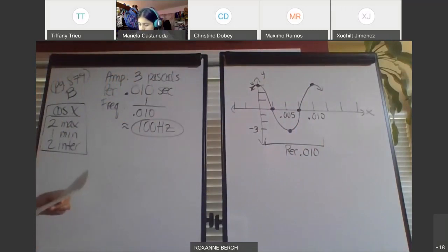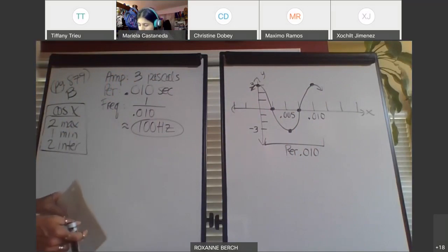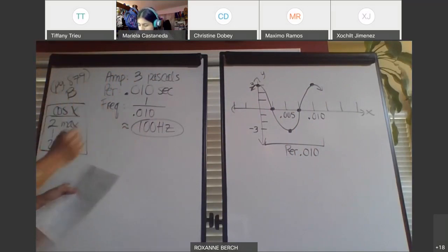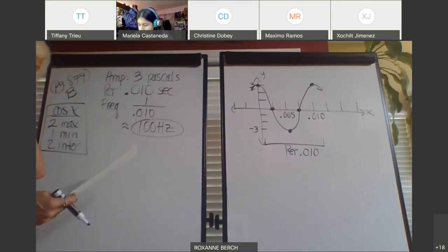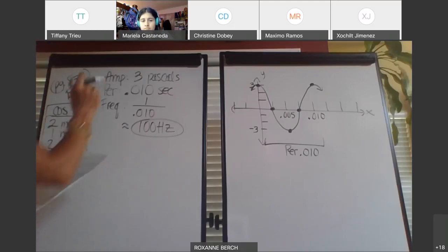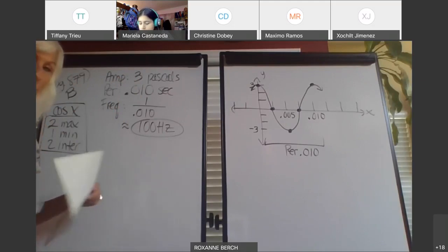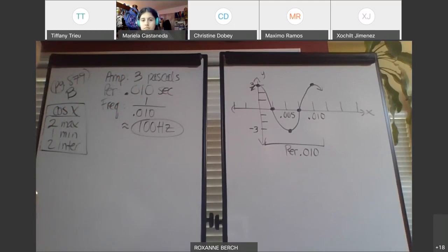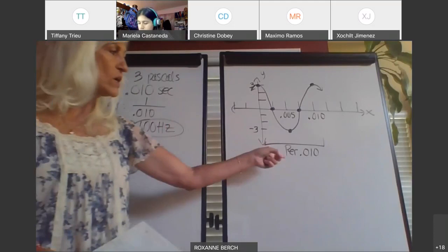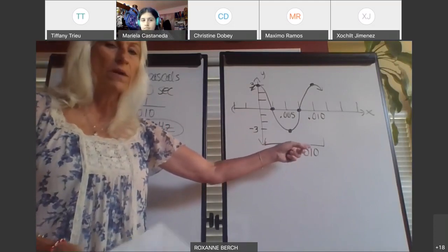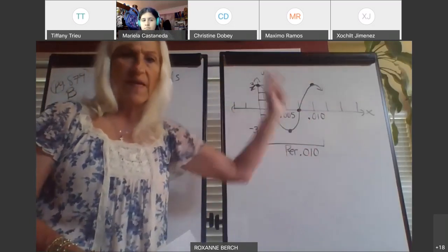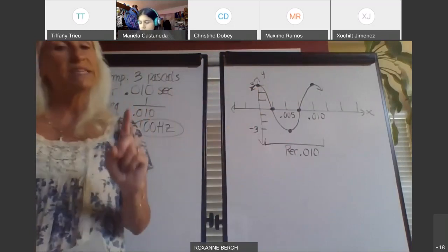Now we answer the questions. The frequency represents the number of sound waves every second. The amplitude of 3 pascals represents the maximum change in air pressure. The period represents the amount of time it takes for the sound wave to repeat a cycle — we see one cycle in a period of 0.010, then another cycle in that same amount of time, and so on.